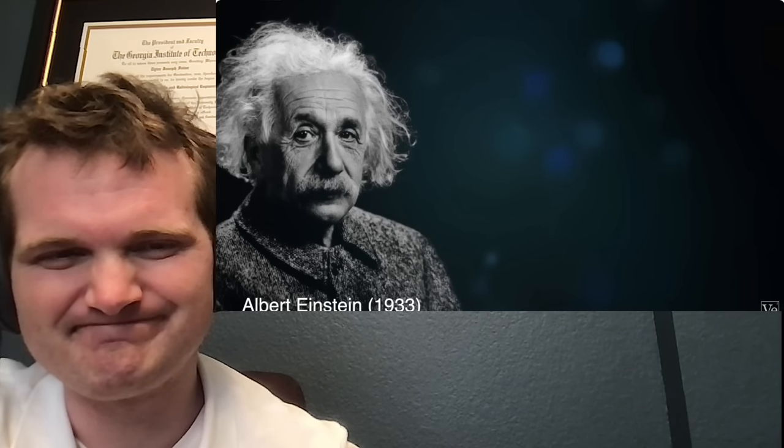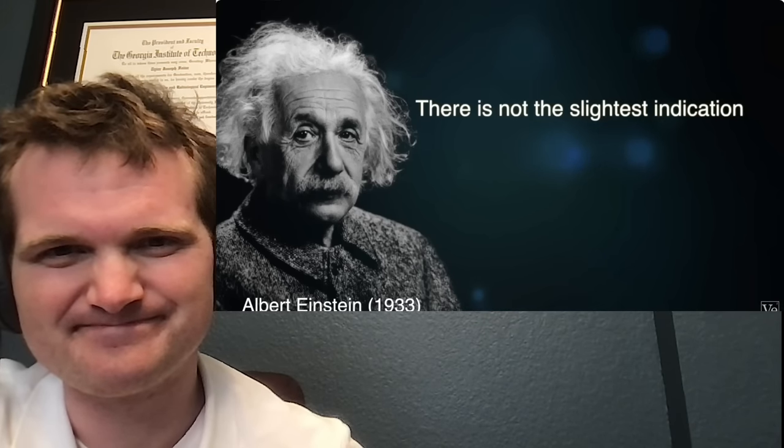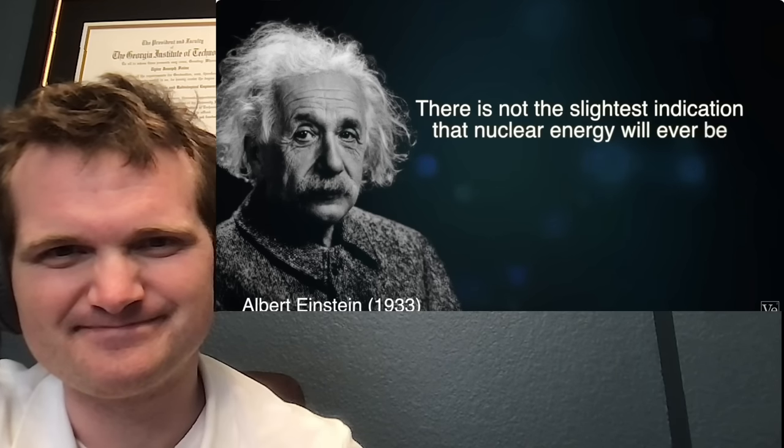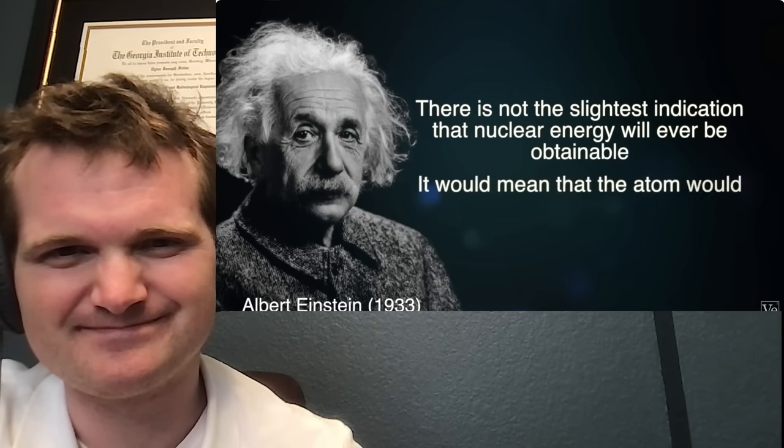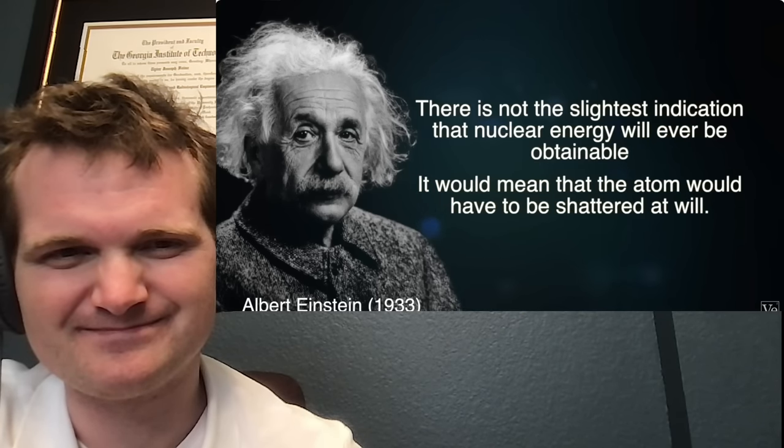As Einstein in 1933 put it, there is not the slightest indication that nuclear energy will ever be obtainable. It would mean that the atom would have to be shattered at will. And that's just the thing. People had no ability to make a nucleus do anything. All we were observing was the natural process of radioactive decay.